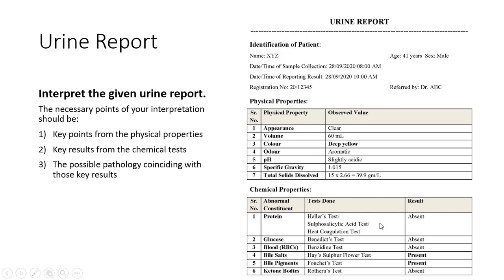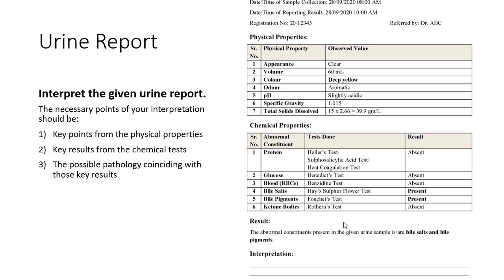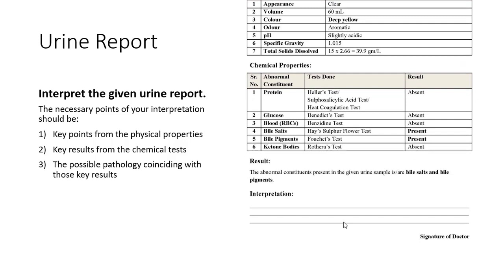Chemical properties: proteins are absent, glucose (Benedict's test) is absent, Lange's ring test is negative. Bile salts are present, bile pigments are present — confirmed by Hay's sulfur flower test and Fouchet's test, both positive. Ketone bodies are absent. The consolidated result: the abnormal constituents present in the given urine sample are bile salts and bile pigments.